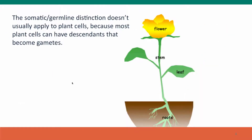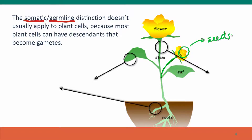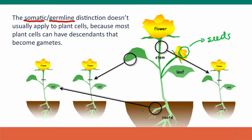The situation is quite different in plants. Plants don't really have the distinction between somatic and germline cells because most plant cells can have descendants that will become gametes. For example, if we cut the flower off, new flower tissue will arise from stem and leaf tissue, and that flower tissue will produce the pollen and ovules that give rise to seeds for the next generation. We also take advantage of this when we take a cutting from a plant — a leaf or part of the root — and propagate it into a complete new plant. So the somatic-germline distinction really doesn't apply to plants, but it certainly applies to us.